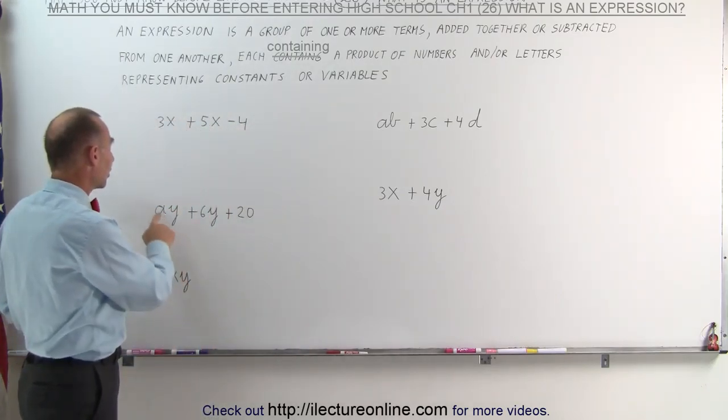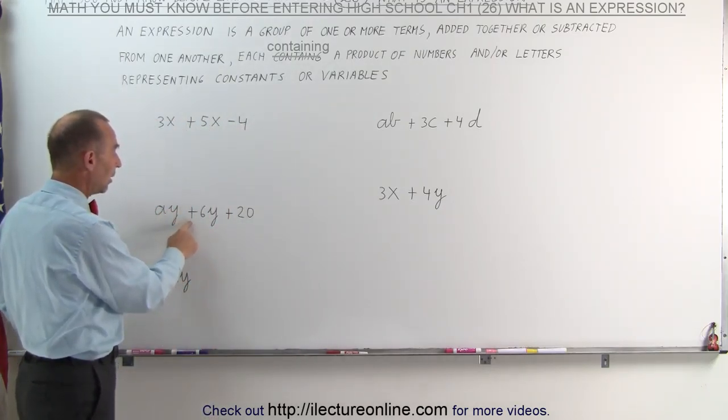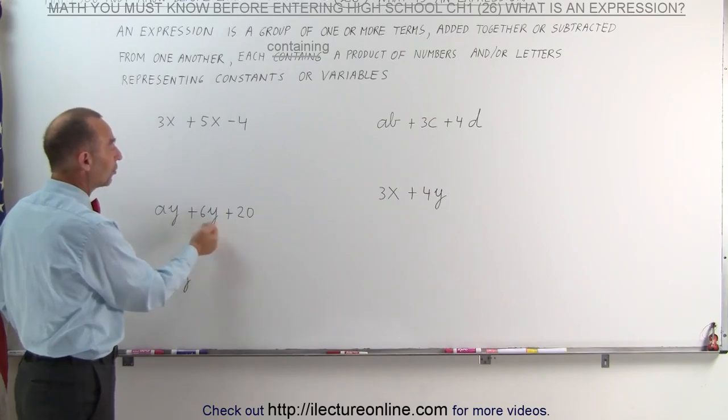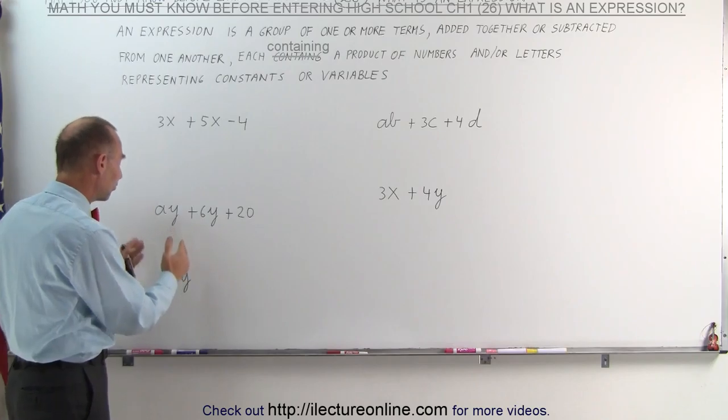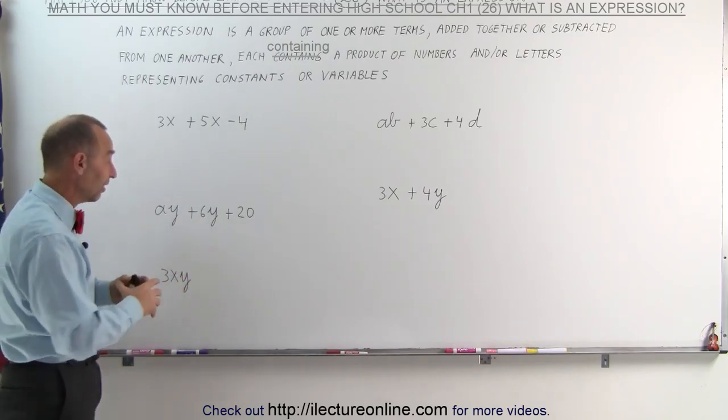Here we have a constant times a variable, a times y, plus 6 times y, y assumed to be a variable, plus the constant 20.